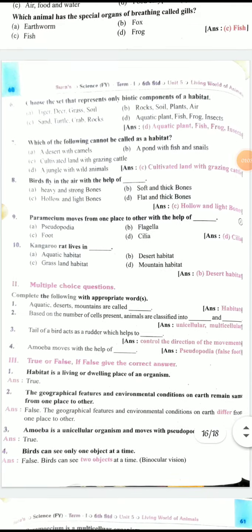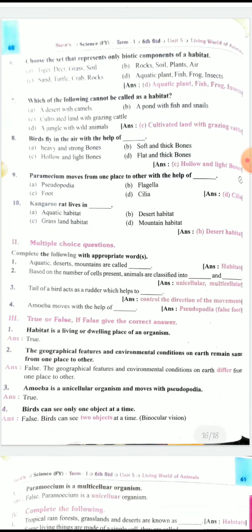Sixth one: Choose a set that represent only biotic components of your habitat. The answer is D: Aquatic plant, fish, frog, insect. Seventh one: Which of the following cannot be called as a habitat? The answer is cultivated land with grazing cattle.